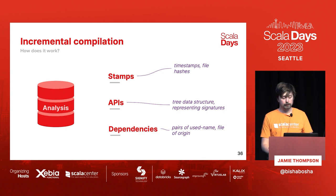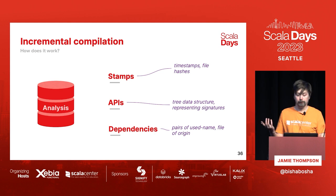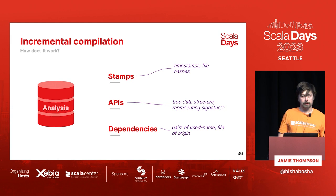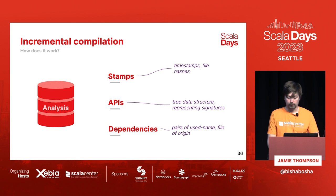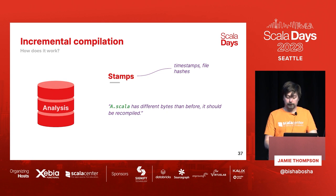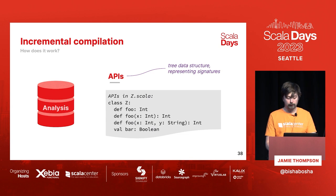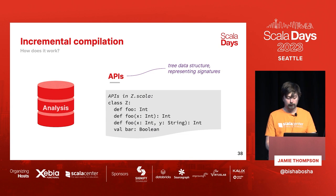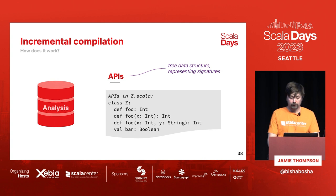The analysis contains several things. We have stamps — timestamps and hashes of file contents — as an efficient way to track whether a file has changed. We also have APIs, a tree data structure representing the signatures of your code: the shape of definitions, return types of methods, arguments, and so on. And we have the dependencies. When a stamp shows a file has been modified on the file system, we pick it up and recompile it. APIs look like: `Z.scala` has class Z with certain definitions recorded — but we don't record the right-hand side or method bodies.